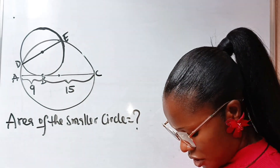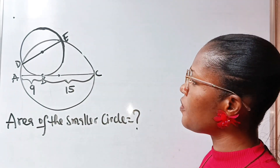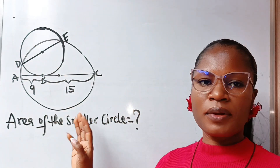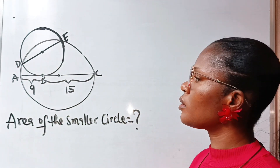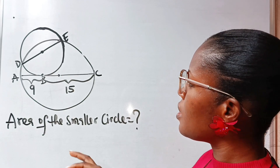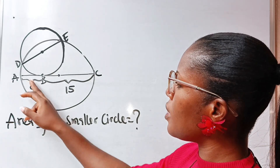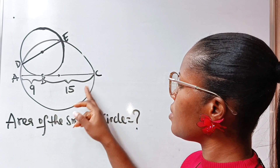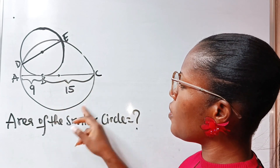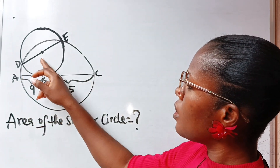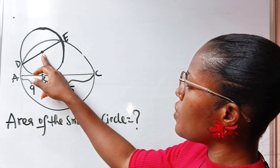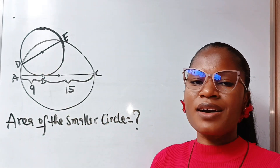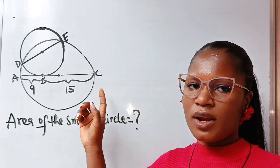Welcome back to my channel. Today we are asked to find the area of this smaller circle. Please note this is not drawn to scale. The problem states that AB — from here to here — is 9, and from B to C is 15. This point is the center of the bigger circle, and this point is the center of the smaller circle. That is the only information we are given. We are asked to find the area of the smaller circle.